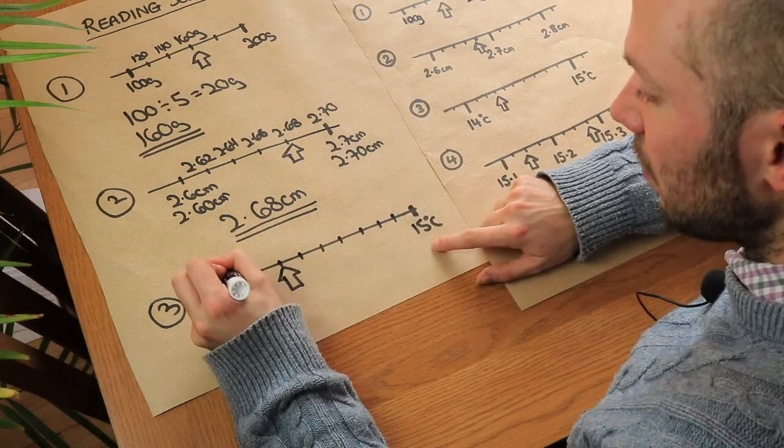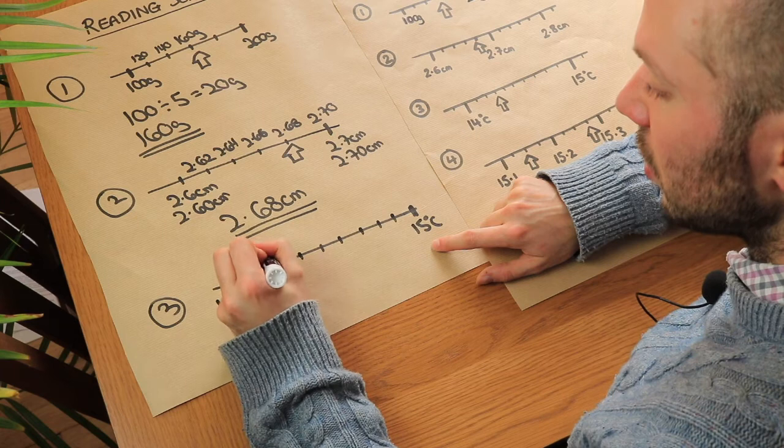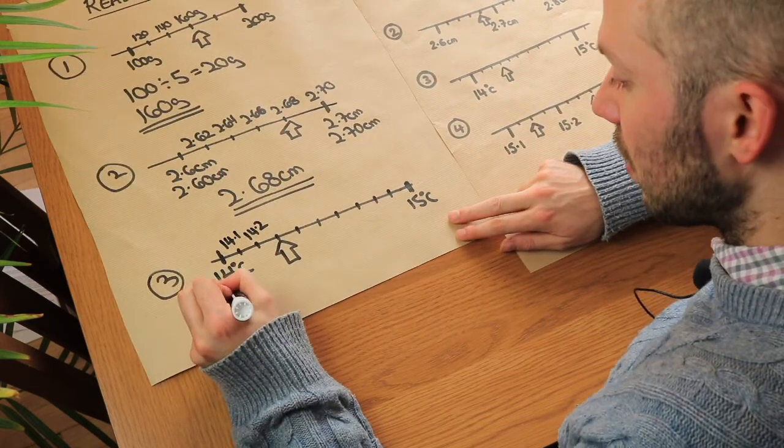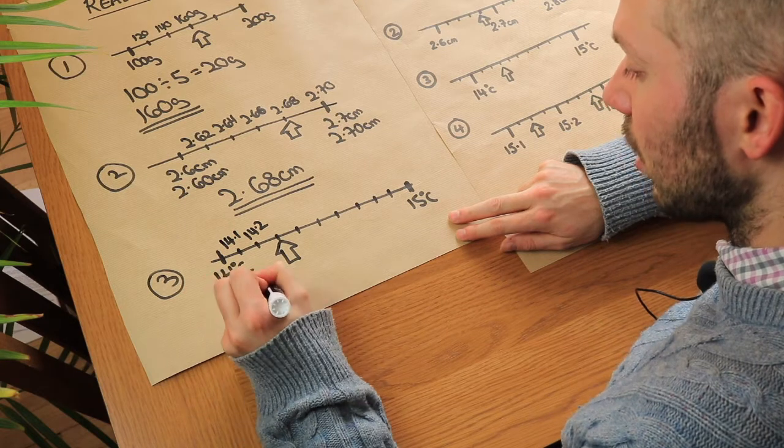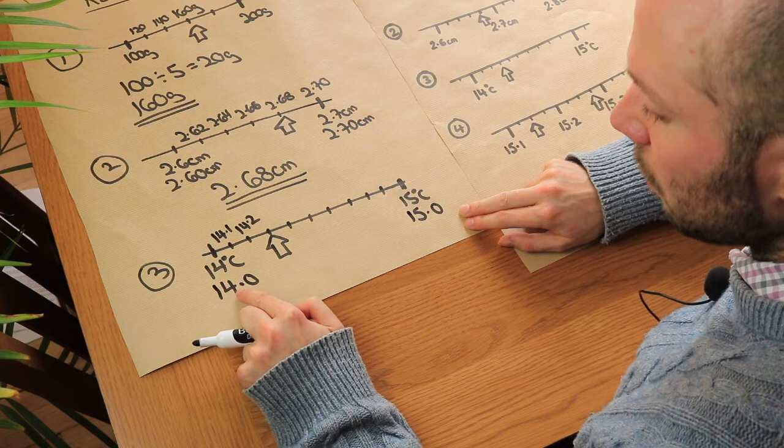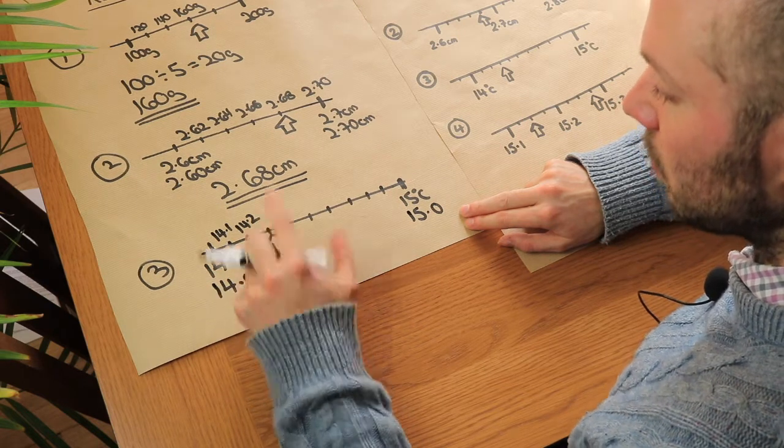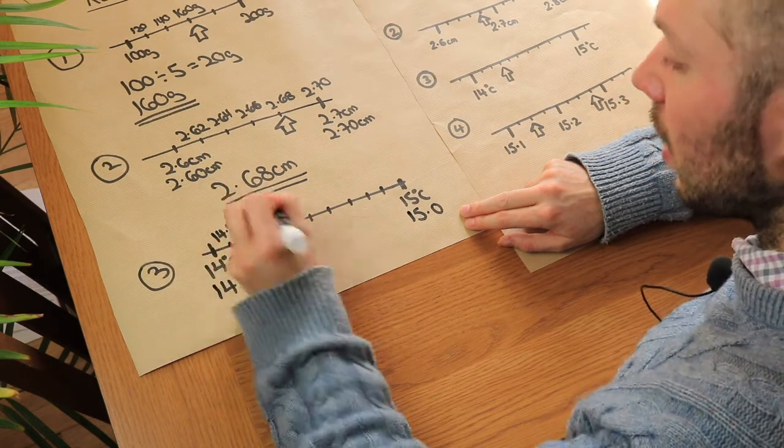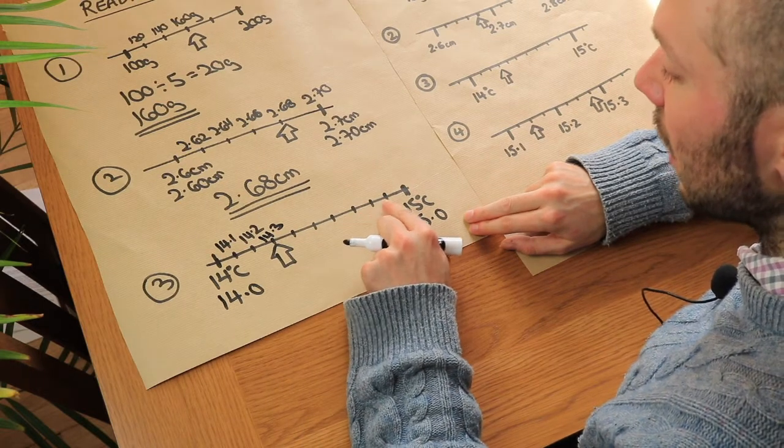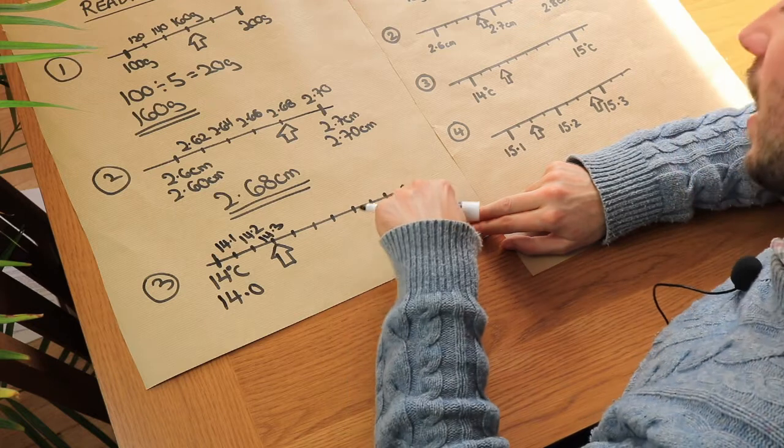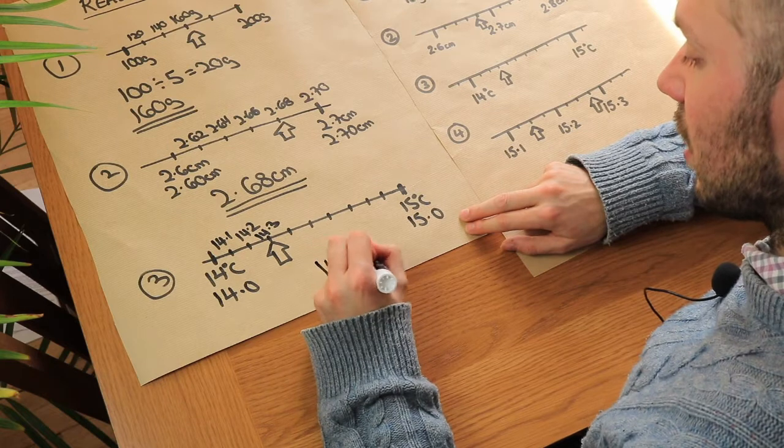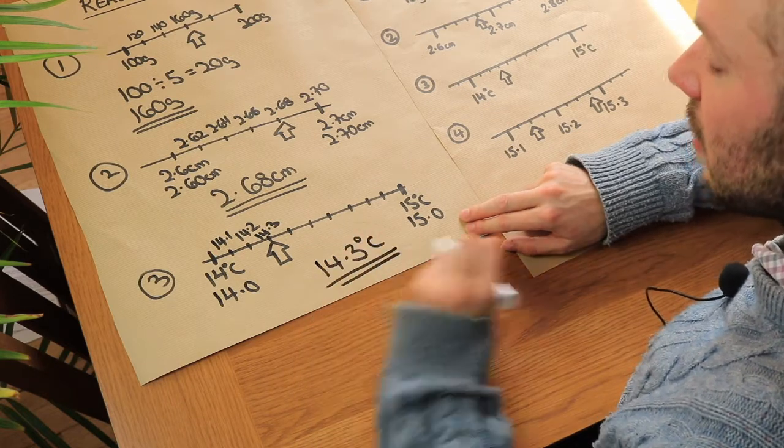So this is going to go up by a tenth each time so 14.1, 14.2, but if that was hard to see again you could use this little trick of just putting a zero at the end. So it's 14.0 and that is 15.0 and then it might be easy to see that it's going to go 14.0, 14.1, 14.2, 14.3, 14.4, 14.5, 14.6, 14.7, 14.8, 14.9 and then it's going to be 15.0. So we can see that temperature there is going to be 14.3 celsius.